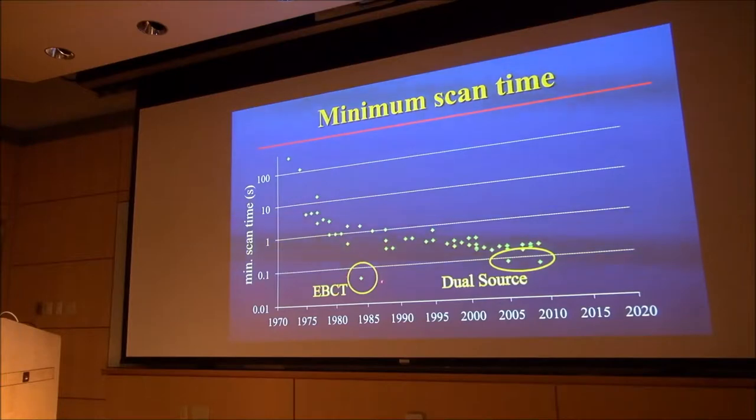Here's a plot of the minimum rotation time as a function of time during the history of CT. The initial scanners were a couple of minutes. You can see a dramatic reduction in the early years, then a plateau, but really still a pretty decent continuing improvement. Interesting outliers: the electron beam CT scanner had 50 millisecond scan time, and these two Siemens dual source scanners are roughly twice as fast as a conventional scanner.